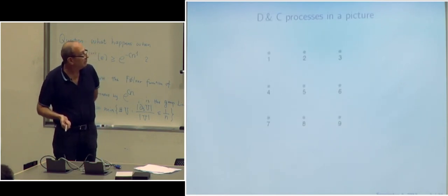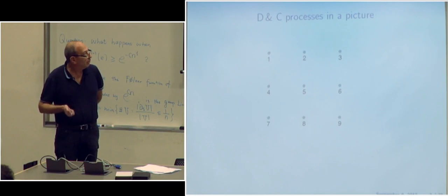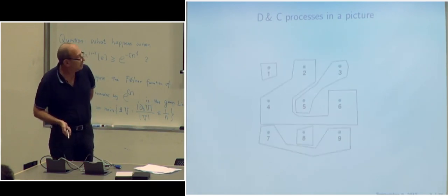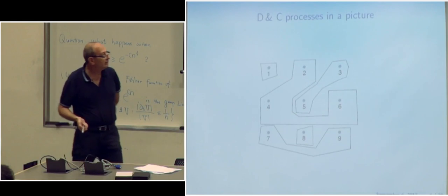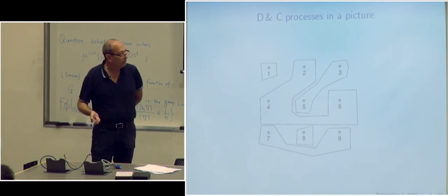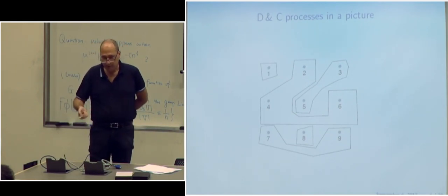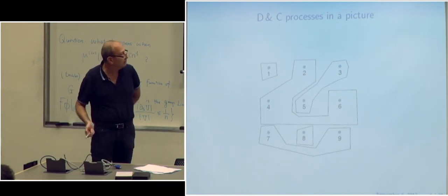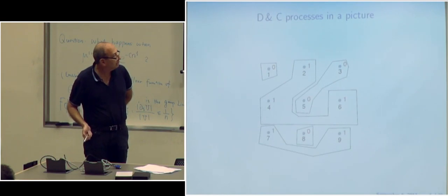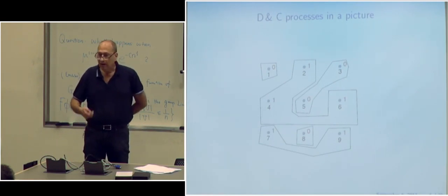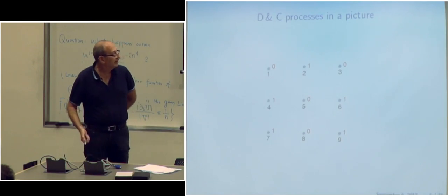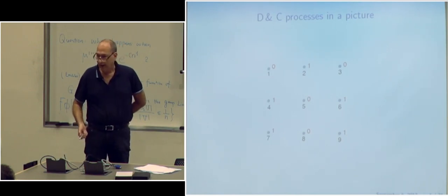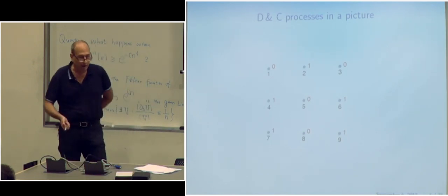Let me show you a quick picture. V has 9 points. We do a random partition — it happened to turn out like this. Now each of these clusters is colored 1 or 0, all elements 1 or 0, with probability P and 1 minus P. It happened to look like this. Then we erase the partition elements, and we're finally left with that. That's a divide and color model.